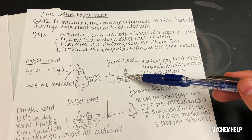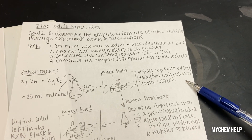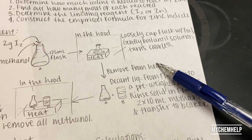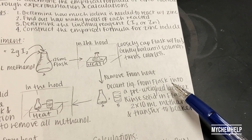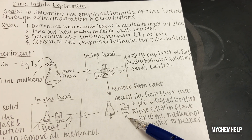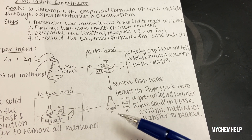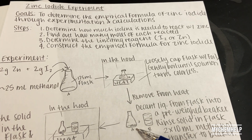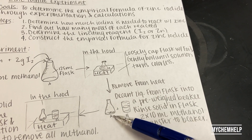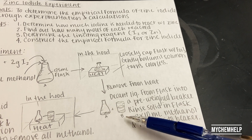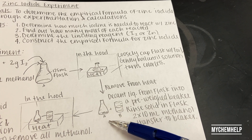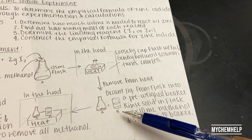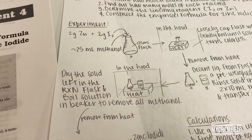You heat the solution, and you'll know the reaction is finished when the solution turns colorless. Next, remove from heat and decant the liquid from the original flask into a pre-weighed beaker. The solid left over will be the excess reagent — the opposite of the limiting reagent. Do a couple rinses with methanol in the flask and transfer that to the beaker as well.